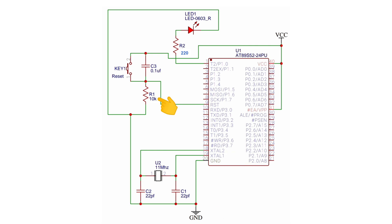A 10 kilohm resistor is connected between the reset pin of the AT89S52 microcontroller and ground. A push switch is connected between VCC and the reset pin. A 0.1 µF ceramic disc capacitor is connected in parallel with the push switch.